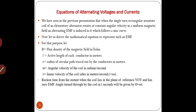A single-turn rectangular coil of an elementary alternator rotates in a uniform magnetic field. Because of the cutting of the magnetic flux — the relative motion between the coil and the magnetic flux — an EMF is induced in the coil, and it follows a sine curve. Now let us derive the mathematical equation to represent such an EMF.